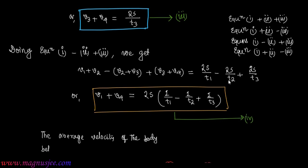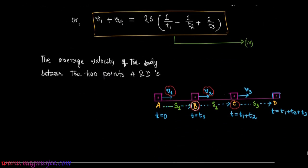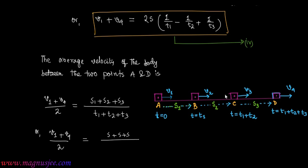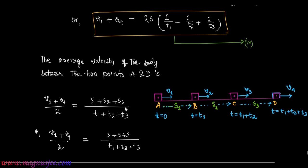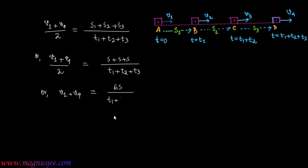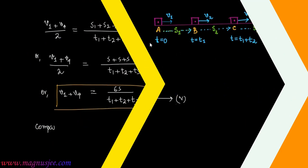The average velocity of the body between the two terminal points A and D is given by (V1 + V4) / 2 = (S1 + S2 + S3) / (T1 + T2 + T3). Since S1 = S2 = S3 = S, this gives (V1 + V4) / 2 = 3S / (T1 + T2 + T3), so V1 + V4 = 6S / (T1 + T2 + T3). This is Equation 5.